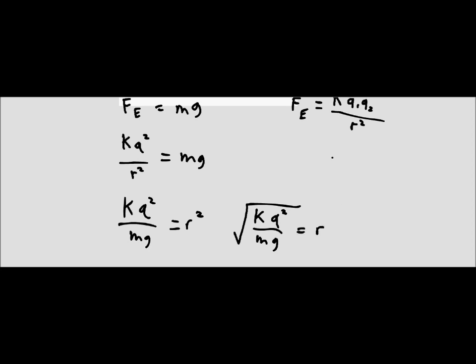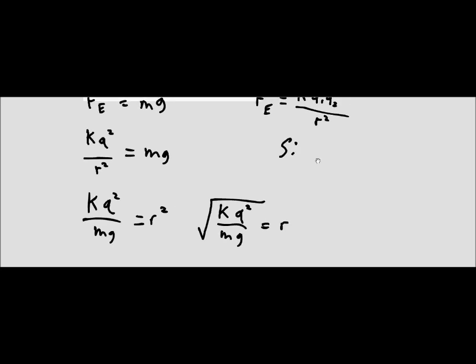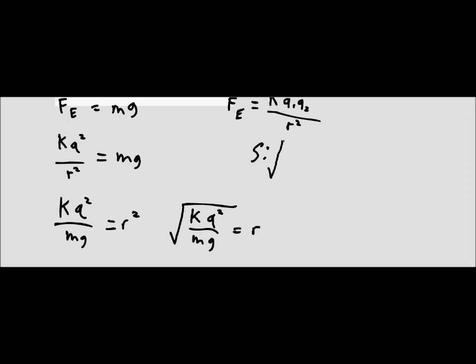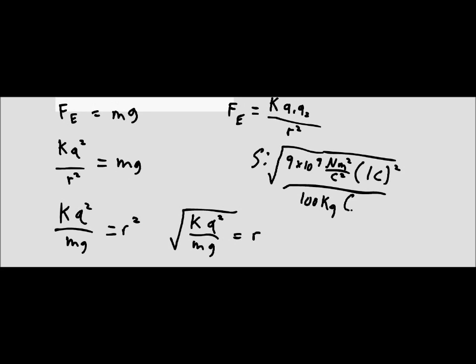And so from here, we can substitute in all of our values. And so we get that the square root of K, so 9 times 10 to the 9 newtons meters squared over coulombs squared, times 1 coulomb and that's squared. And I am very sorry that this is all crooked. I'm writing at an angle here while I'm trying to record this tutorial. And then that is all over 100 kilograms times 9.8 meters per second squared.